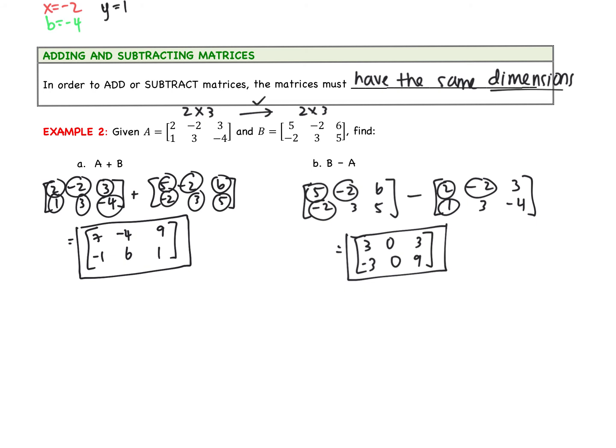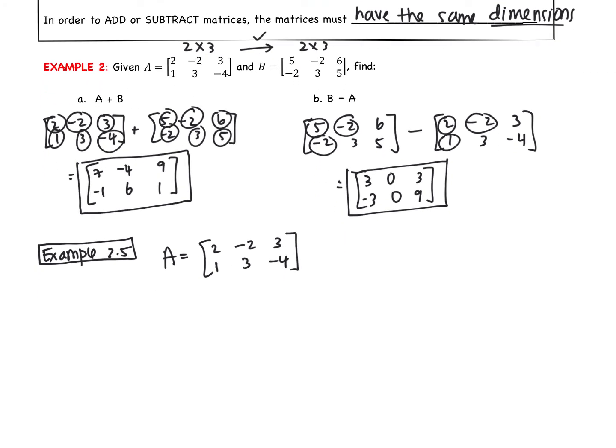Quick note real quick. We're going to call this example 2.5. Recopy, if you would, that matrix A from above. One other thing you have to be able to do before we move on is identify specific elements. So I could ask you to find A of 2, 1, A of 1, 2, A of 3, 2. So that's what we're going to do real quick.